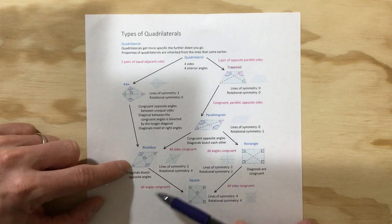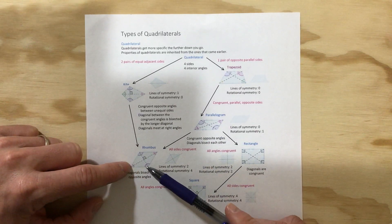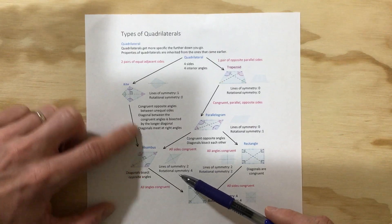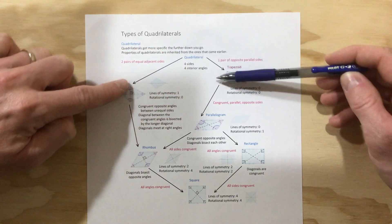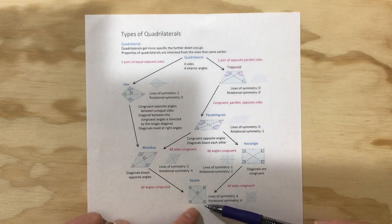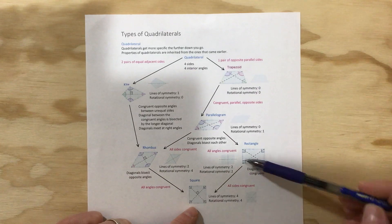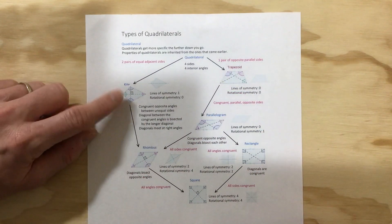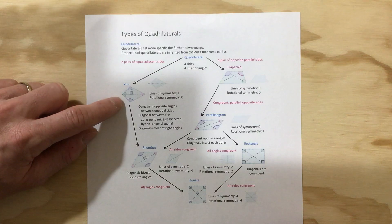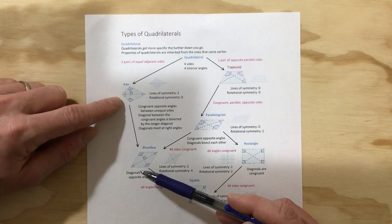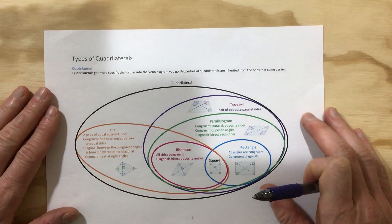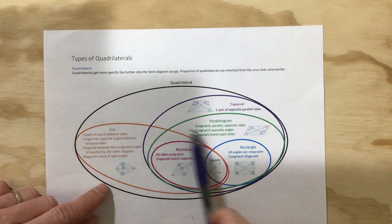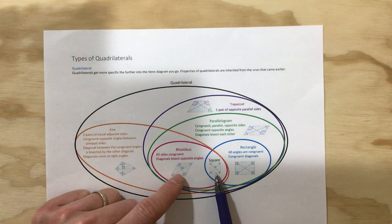A rhombus has all the properties of a kite but also has four congruent sides, not four congruent angles. A kite is just the general case. It's interesting how quadrilaterals split into trapezoids and kites and come back together with a square — a square literally has everything, all of those properties. If you look at the kite circle in the diagram, it encompasses both a rhombus and the square.